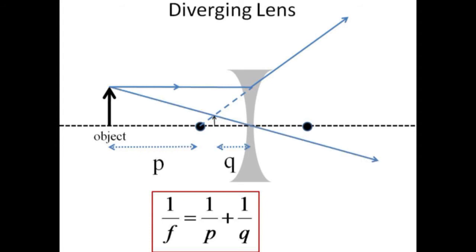A ray through the center of the lens goes unrefracted. A ray headed toward the far focal point emerges parallel to the optical axis. These rays can all be traced back to the virtual image with negative q value. The same lens equation is used but f and q are both negative in this case.